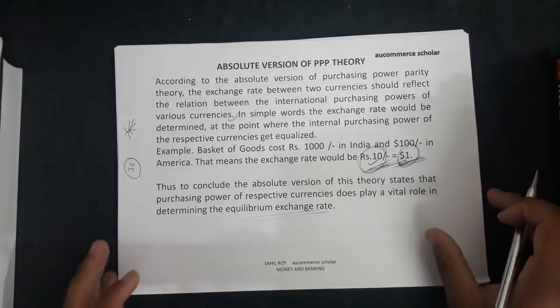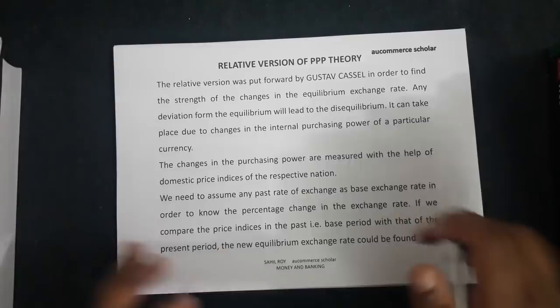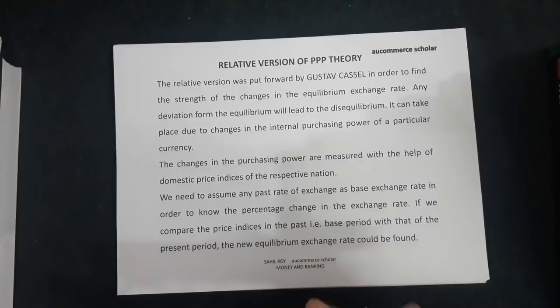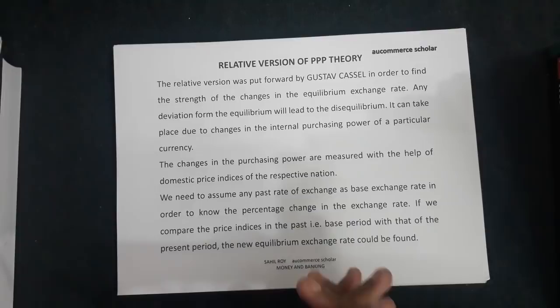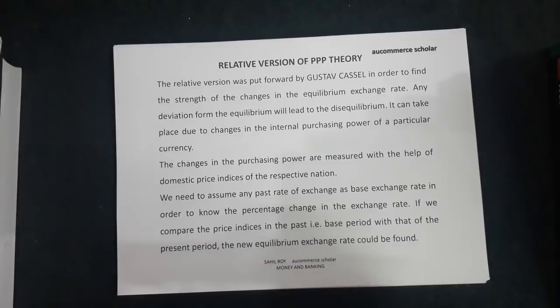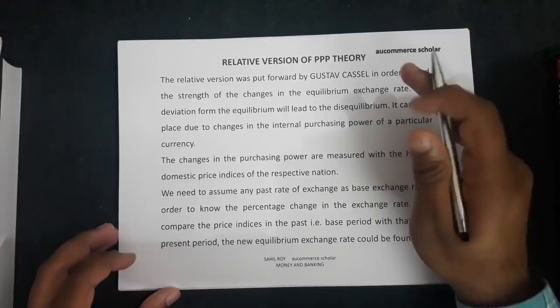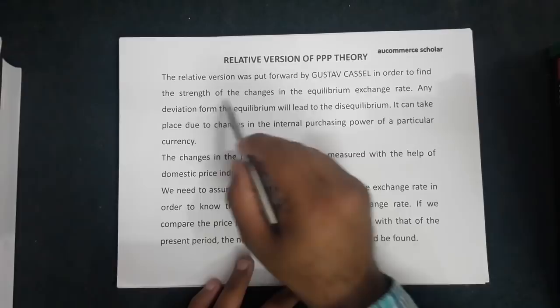The relative version of PPP theory, also given by Gustav Cassel, accounts for inflation in every country. For example, if inflation comes to India, the value of money will devaluate and the value of foreign exchange will automatically increase. The relative version was put forward by Gustav Cassel in order to find the strength of the changes in the equilibrium exchange rate.